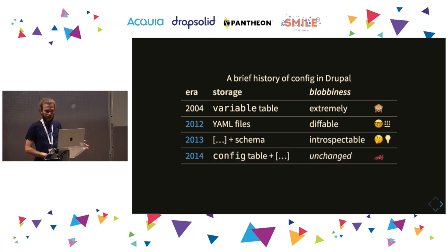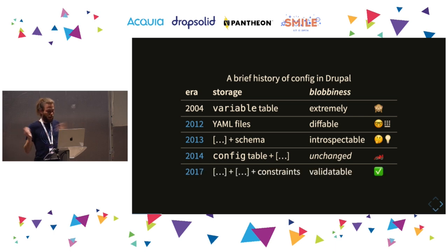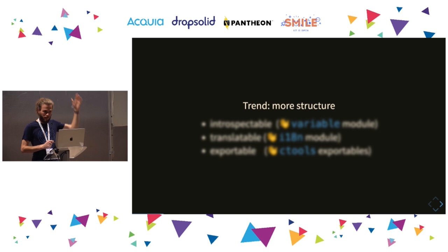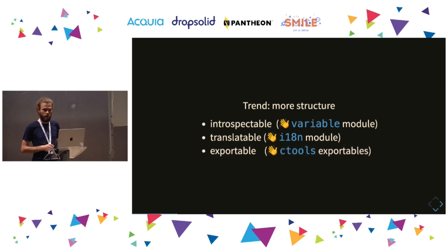By moving to YAML files and having to read dozens or hundreds of YAML files on each page request — yeah, that's going to be slow — so we had to move it back into the database. But it's just reading the YAML files and storing them in the database once, so performance was fine again. Drupal 8 shipped, and then after that we added validation constraints, making things validatable in principle. The trend is that we're adding more structure over time, removing the need for the Drupal 7 variable module, the internationalization module, and Ctools exportables.